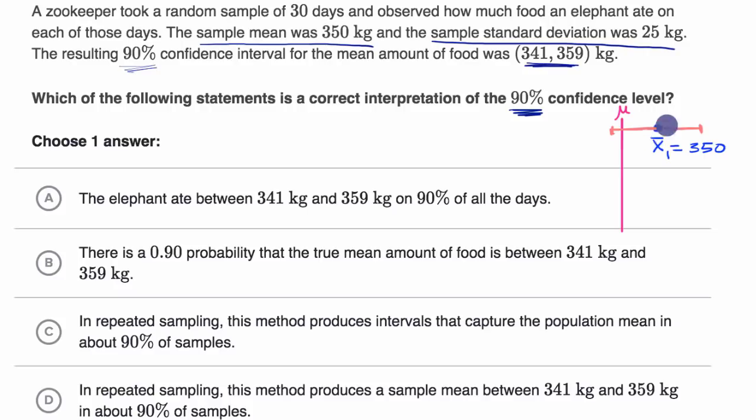The whole point of a 90% confidence level is if I kept doing this, so this is our first sample and the associated interval with that first sample, and then if I did another sample, let's say this is the mean of that next sample, so that's sample mean two, and I have an associated confidence interval.